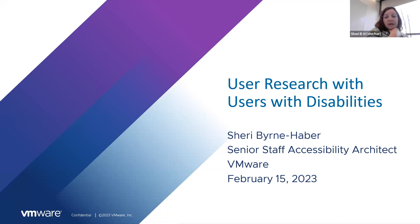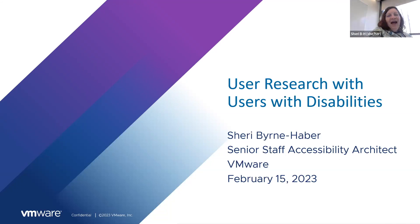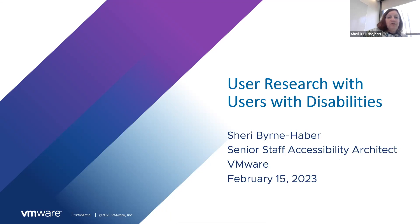So, about me: I am a senior staff accessibility architect — senior staff is a senior director level position, it's a little bit more important than it sounds. I've been at VMware for four years now, where I do a lot of strategy, innovation, and outreach pertaining to our accessibility program.